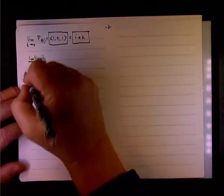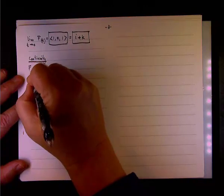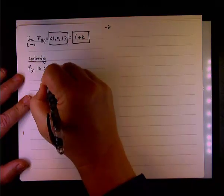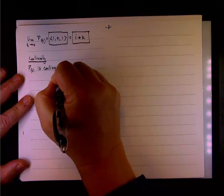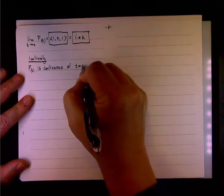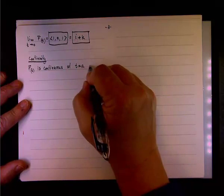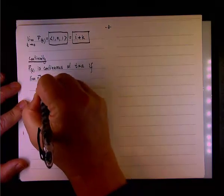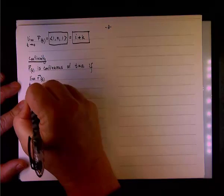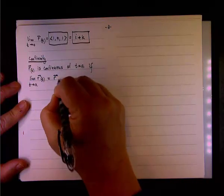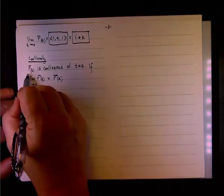And the same thing applies here. We're going to say that the vector function r(t) is continuous at t equals a if the limit of r(t) as t approaches a equals r(a).